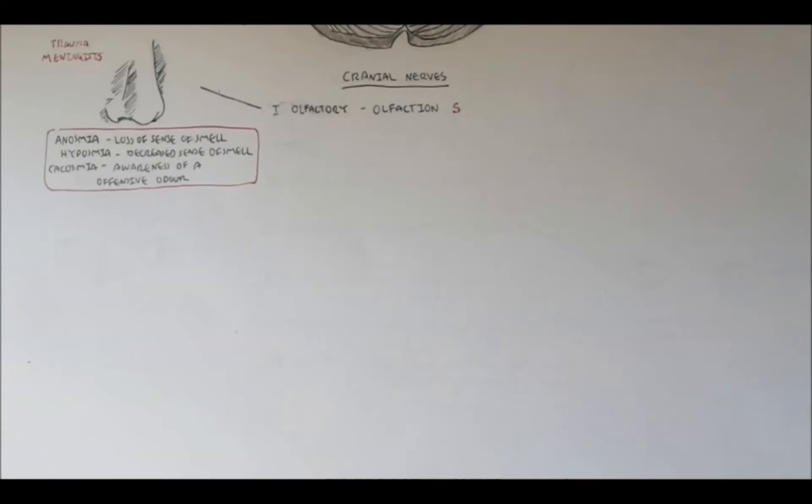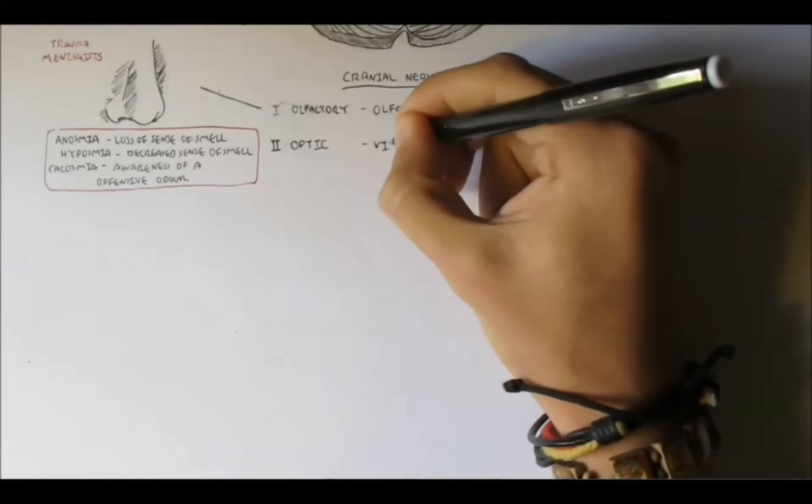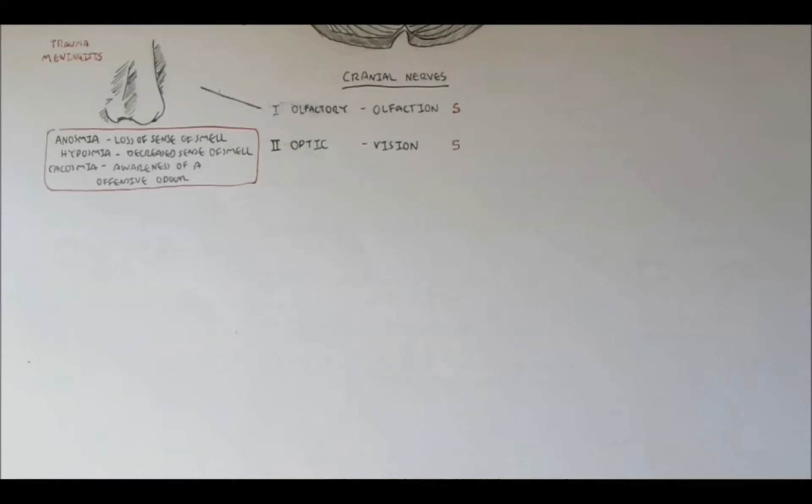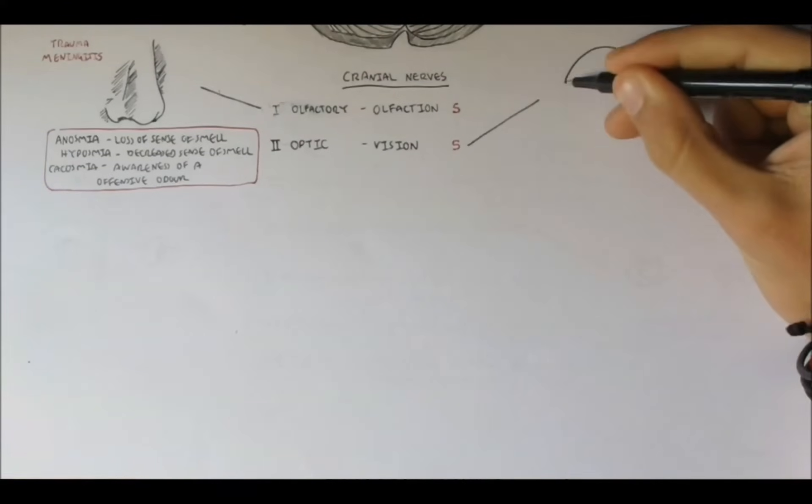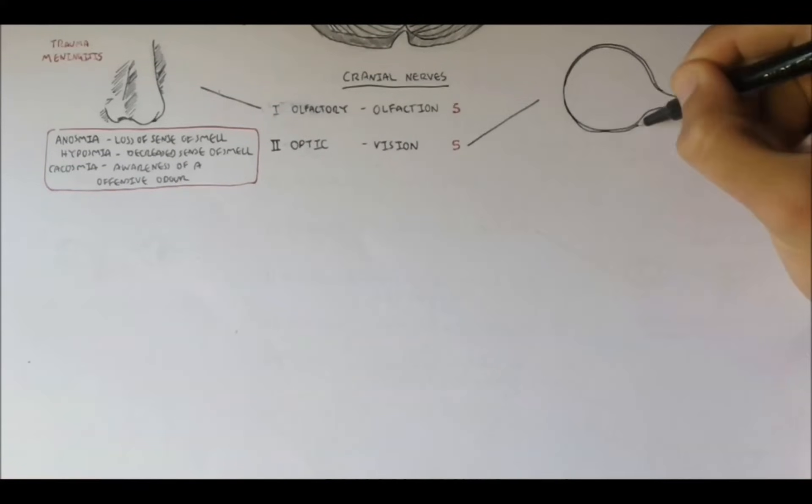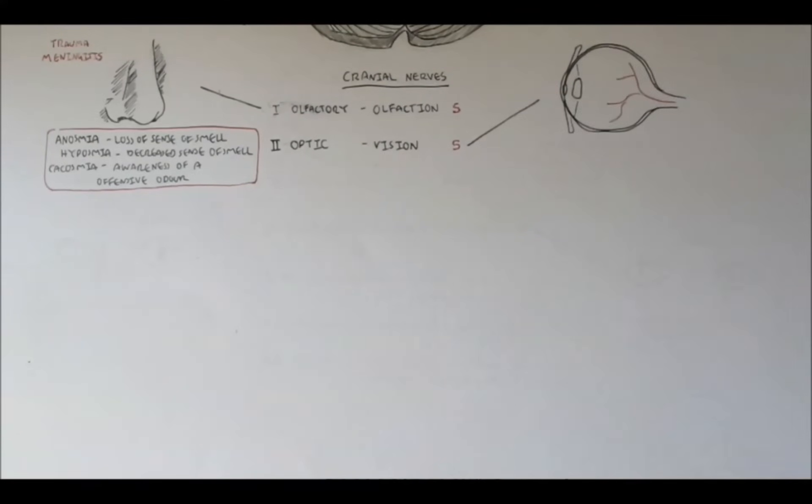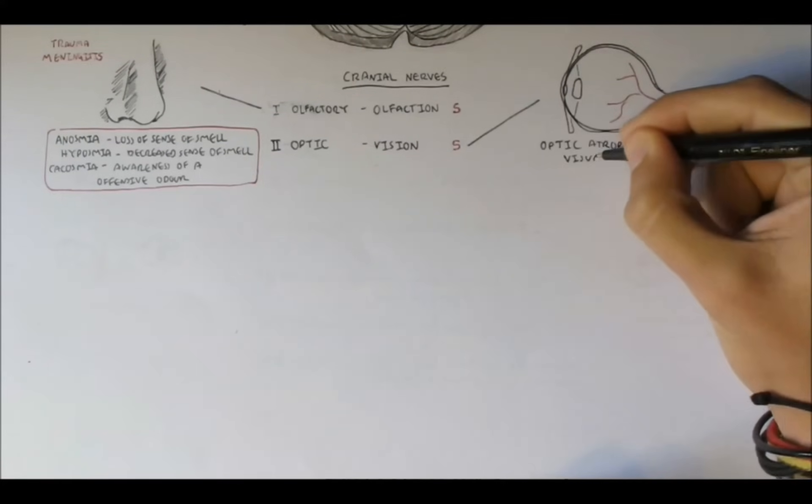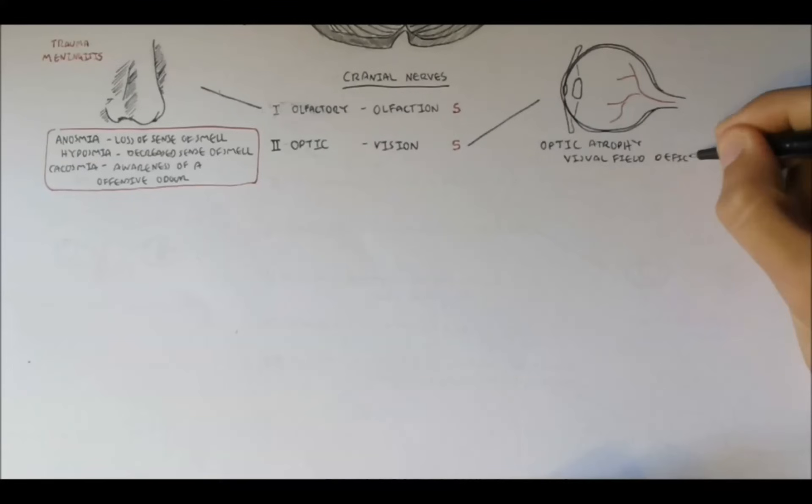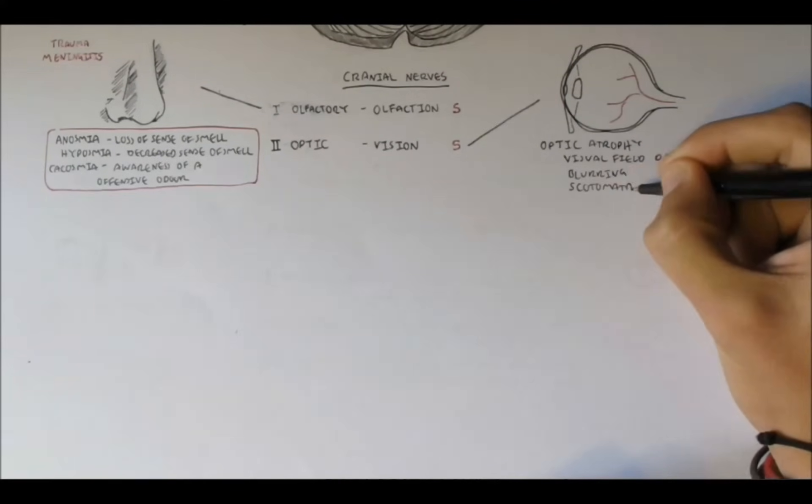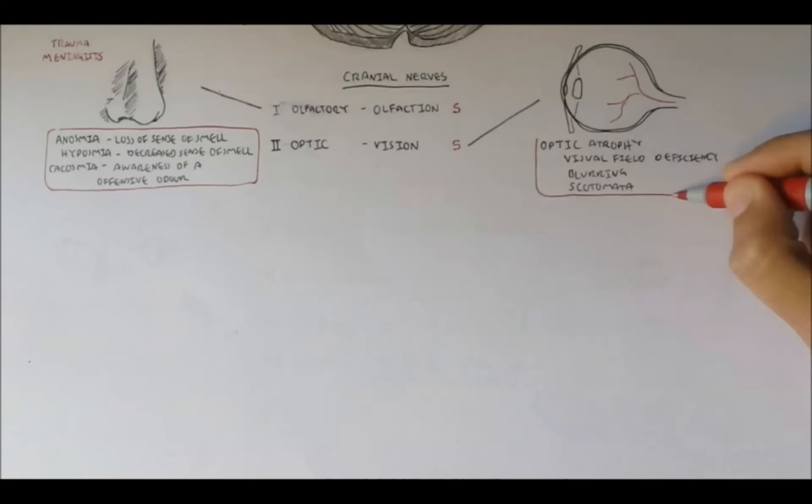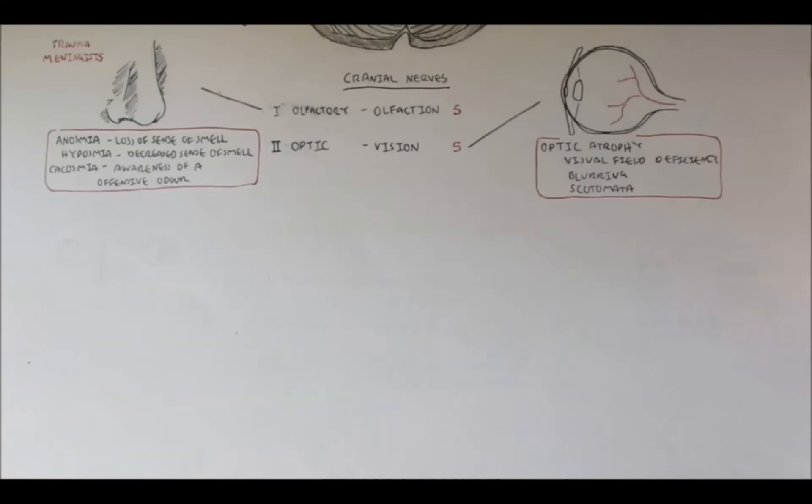Nerve 2 is the optic nerve, which is for vision, and so it's a sensory nerve. We receive information on what we see from the eyes through this nerve. Damage to this nerve can cause a variety of eye problems, optic atrophy, visual field disorders, blurry vision, and scotomata, which is diminished vision within the visual field. Causes can be from ischemia, edema, hemorrhage, and other forms of traumas.